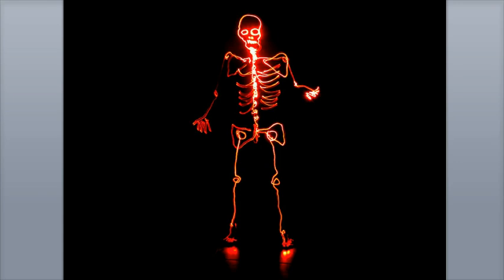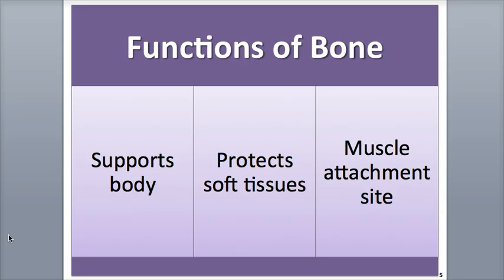Bone tissue is constantly tearing itself down and building itself back up in a process called remodeling. The skeletal system performs a wide range of functions, including body support. Bone forms the framework of the body's structure, supporting tissues and organs, and making strong connections with the muscles and tendons.